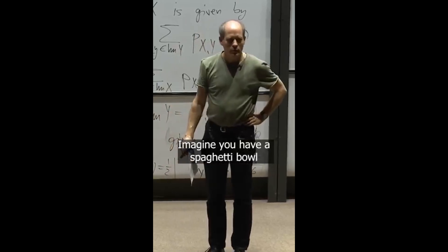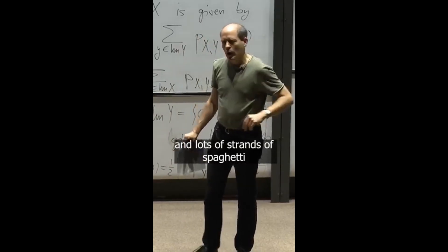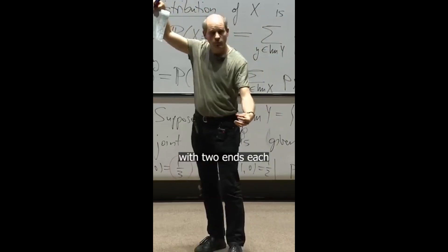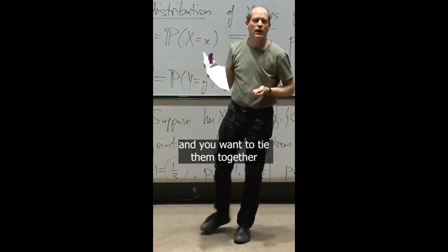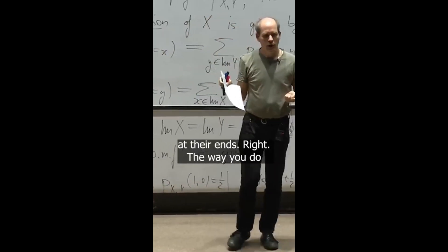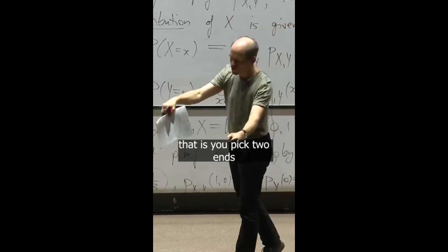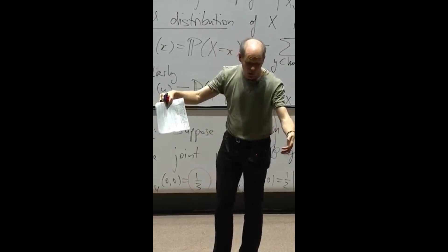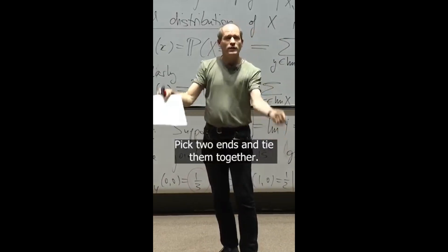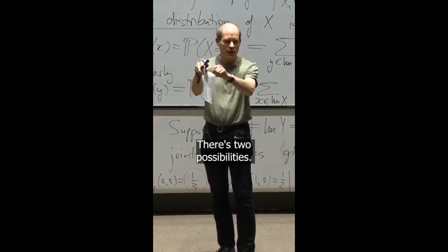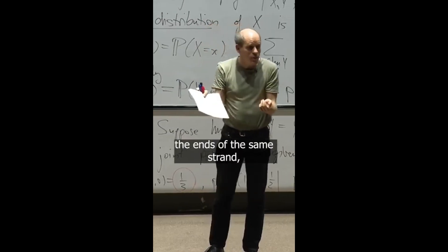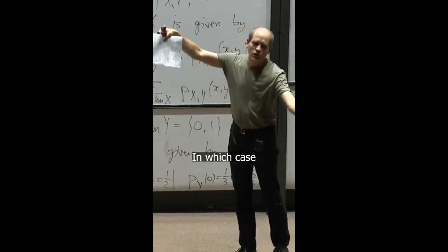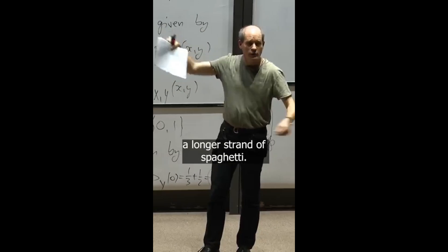Imagine you have a spaghetti bowl and lots of strands of spaghetti with two ends each, and you want to tie them together at their ends. The way you do that is you pick two ends out of your bowl. Suppose the bowl has n strands. Pick two ends and tie them together. There are two possibilities: either they are the ends of the same strand, in which case you form a loop, or they are the ends of different strands, in which case you just get a longer strand of spaghetti.